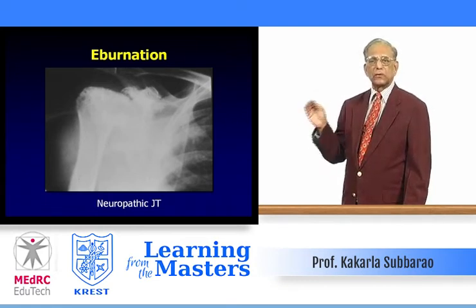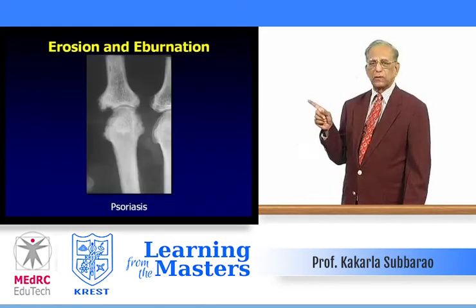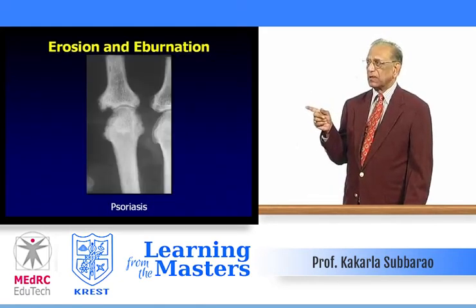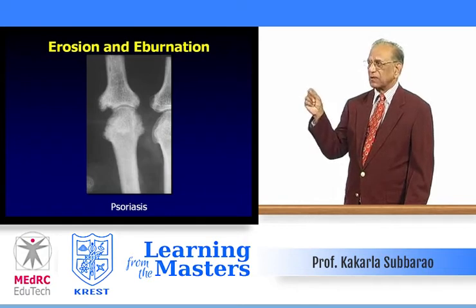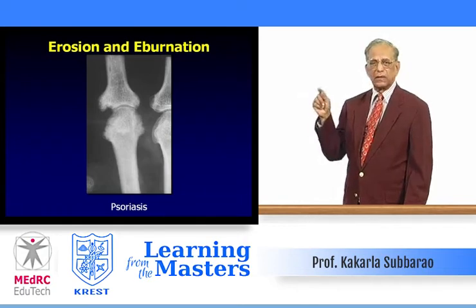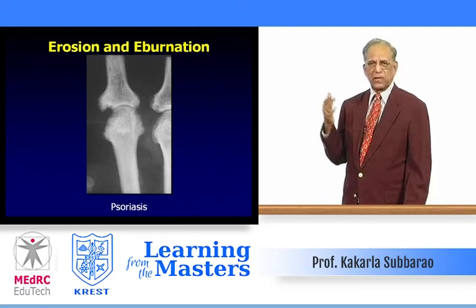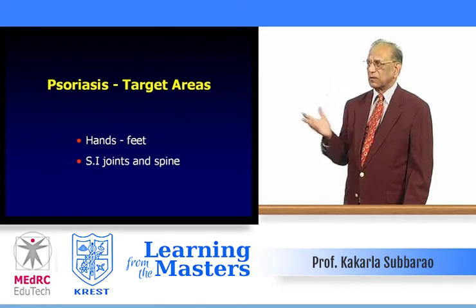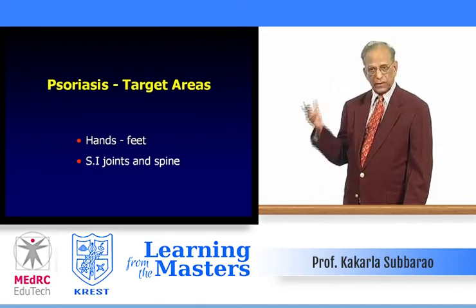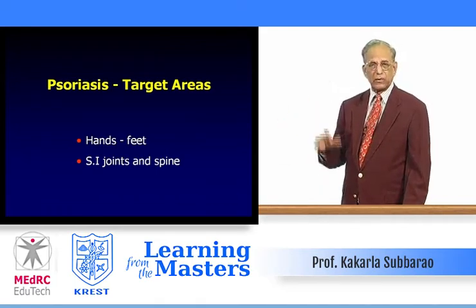Eburnation is subarticular or articular sclerosis as if to support a weak joint. A combination of erosion and eburnation occurs in psoriasis: look at the peripheral erosion of the proximal phalanx, the osteophyte, and the irregular reactive sclerosis along the metacarpal head — this pattern is typical of psoriasis and nothing else. Target areas for psoriasis: hands and feet, sacroiliac joints, and spine — feet less commonly involved compared with Reiter's syndrome.